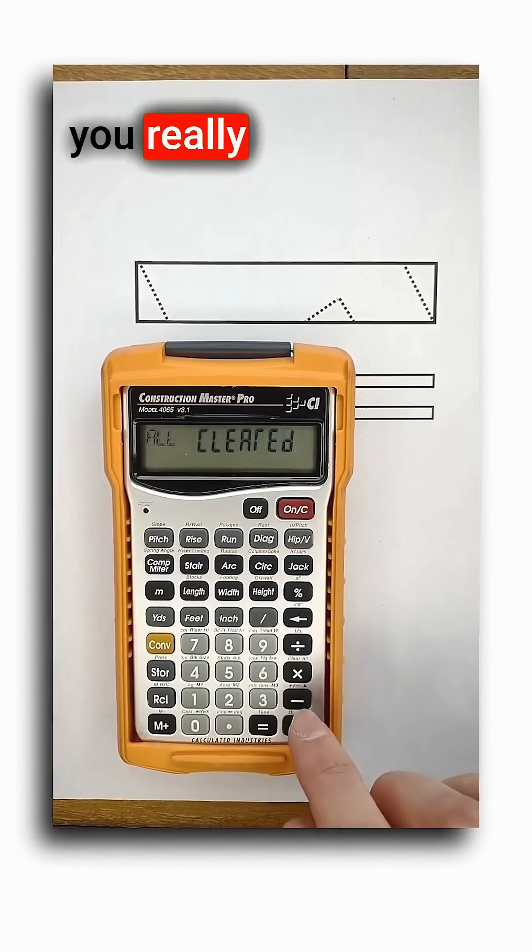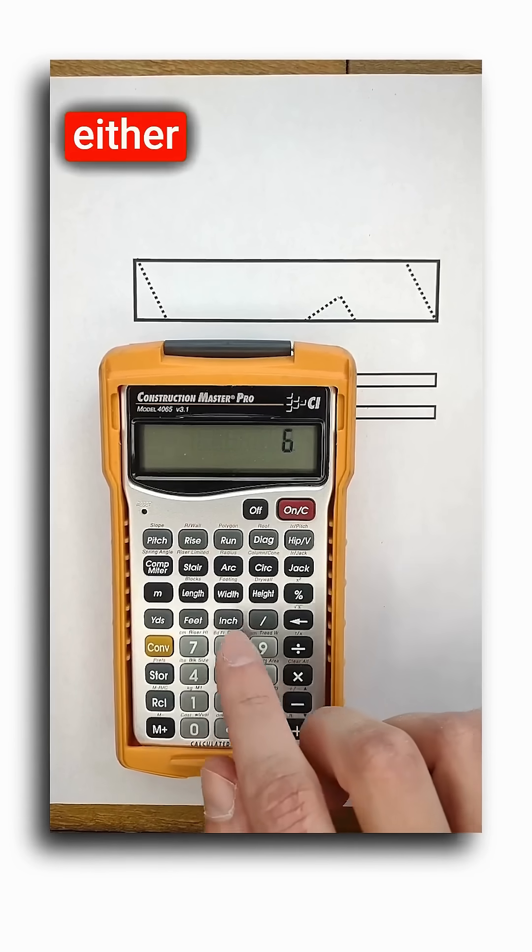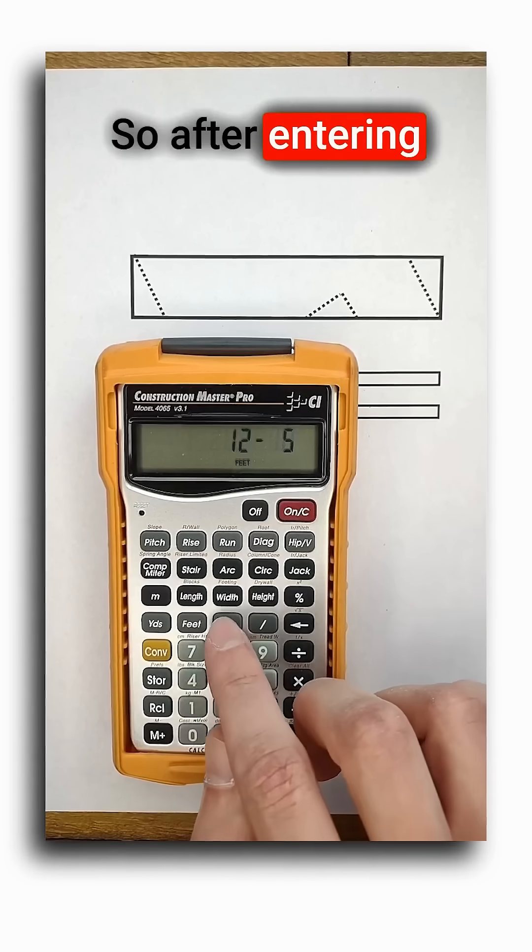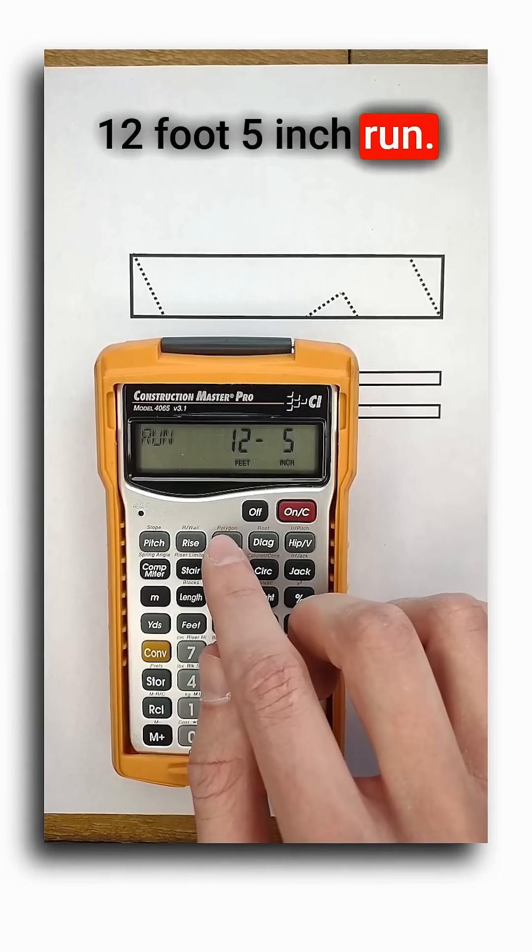Other than pitch, all you really need to tell the calculator is either the rise or run. Most commonly you'll enter run, so after entering pitch I'll enter a 12 foot 5 inch run.